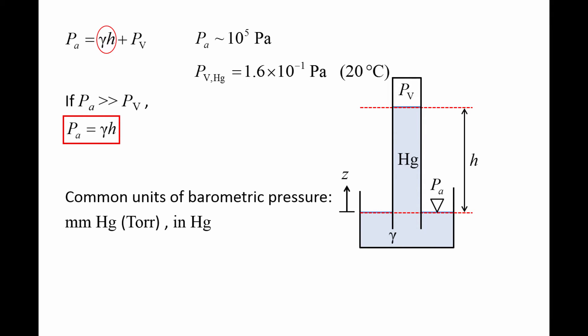Common units of barometric pressure are millimeters mercury, which is also called a torr, or inches mercury. At 15 degrees Celsius and one atmosphere of pressure, the column height of a mercury barometer would be 760 millimeters or 29.92 inches.